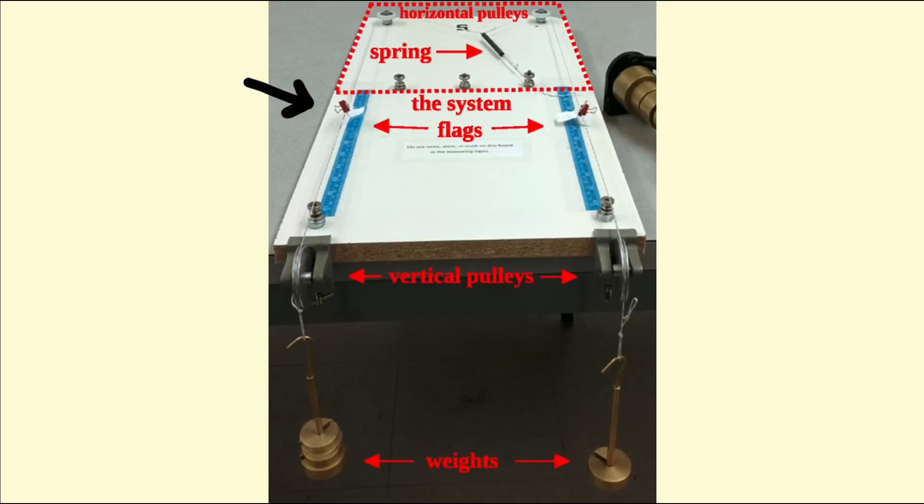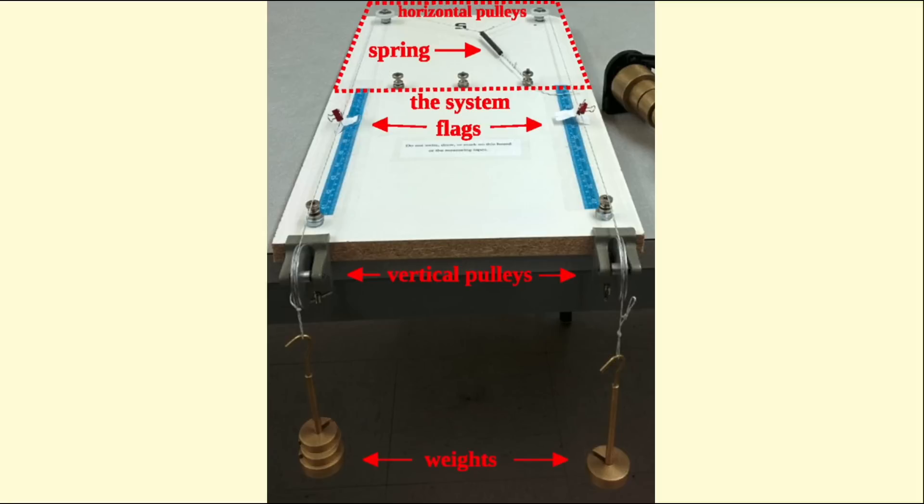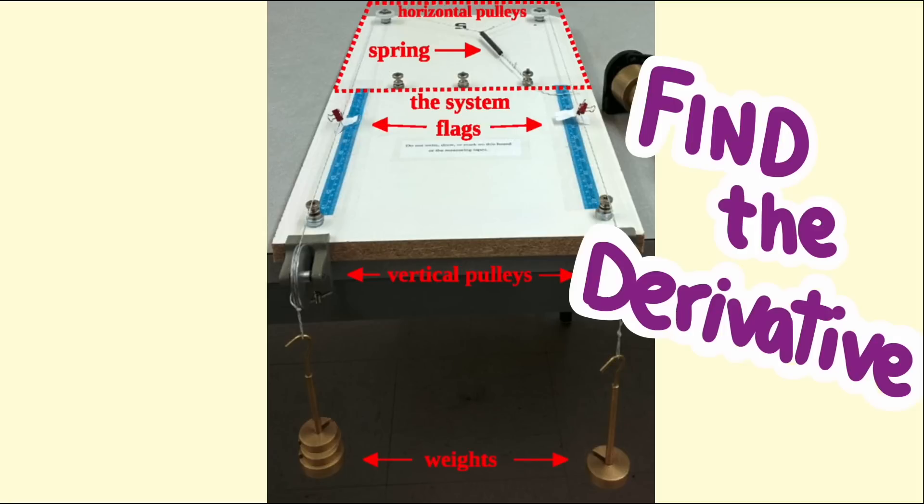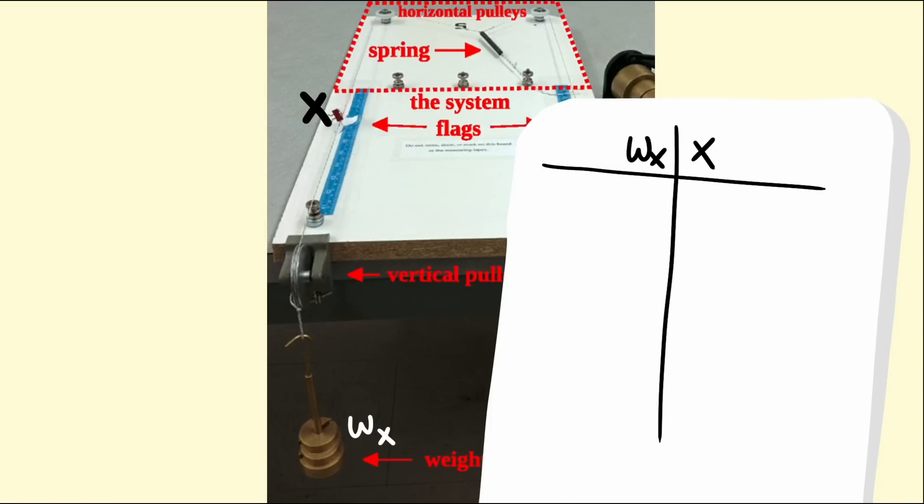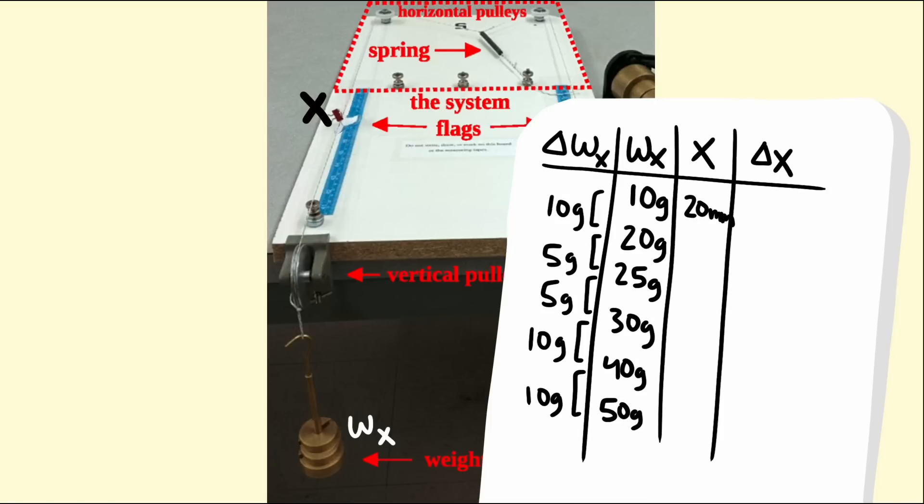Adding or taking away the weights hanging off the table would move the position of the strings, and the two strings had rulers and an indicator to show the string position. The question the groups were to answer was to find the derivative of x, the marker position of the string on the left, with respect to the force, which is the weight hanging off the edge on the left side. Both the scientists and engineers went about collecting some data to see how a small change in force impacted the change in the marker on the string. They did this by adding or taking away a small amount of weight and calculating the change in position of the string marker.